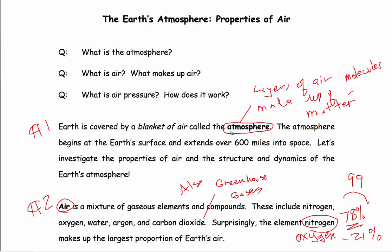Where do we see the meaning or the description for what atmosphere is? Well, this is pretty good right here. A blanket of air. Also layers of air made up by matter made up of molecules. So the atmosphere extends over 600 miles into space.